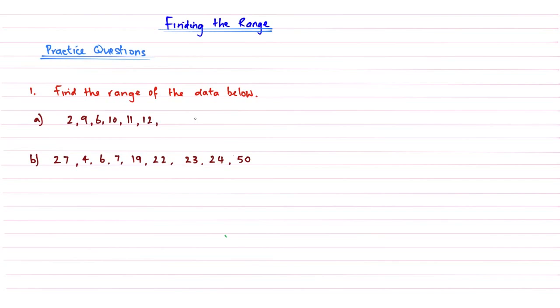Okay, so you've had a go at those two questions finding the range. Now as in the definition, the range is the highest value subtract the smallest value. We need to go through and find the highest. In our first data set, the highest value is 12, and my lowest value is 2. So 12 subtract 2 gives me 10, and so my range of the first data set is 10.